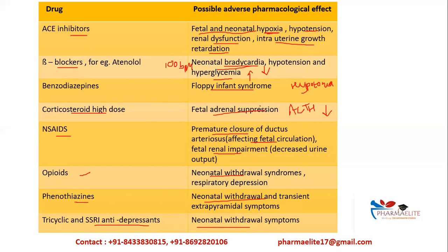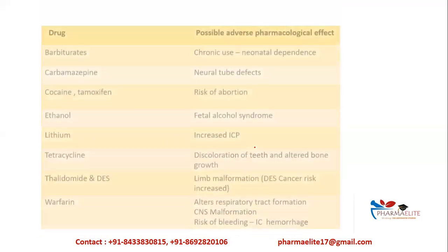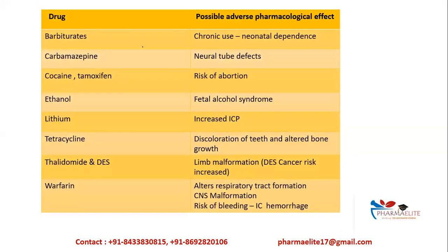Regarding NSAIDs: the premature closure of the ductus arteriosus occurs mainly because of inhibition of prostaglandin synthesis. When prostaglandin synthesis is inhibited, fetal circulation is affected and premature closing of the ductus occurs.